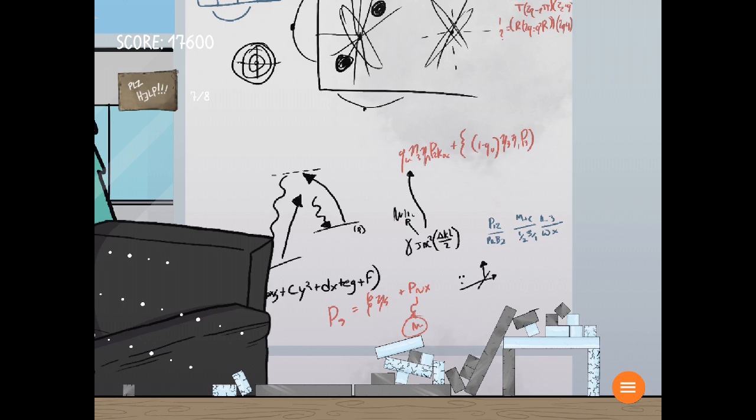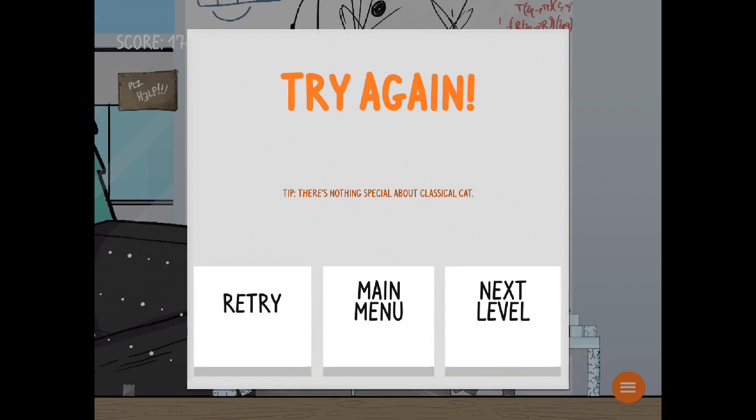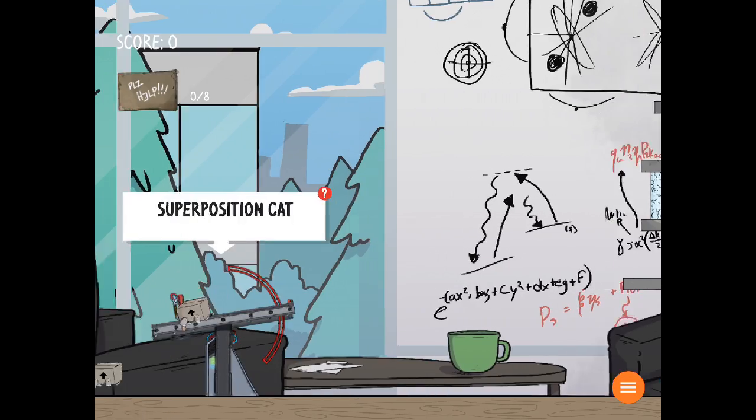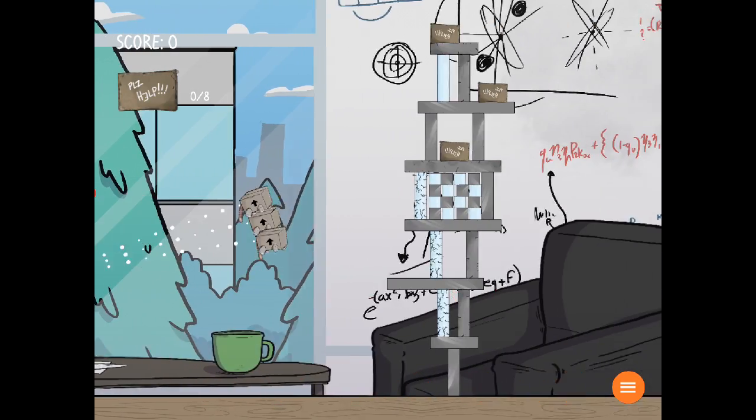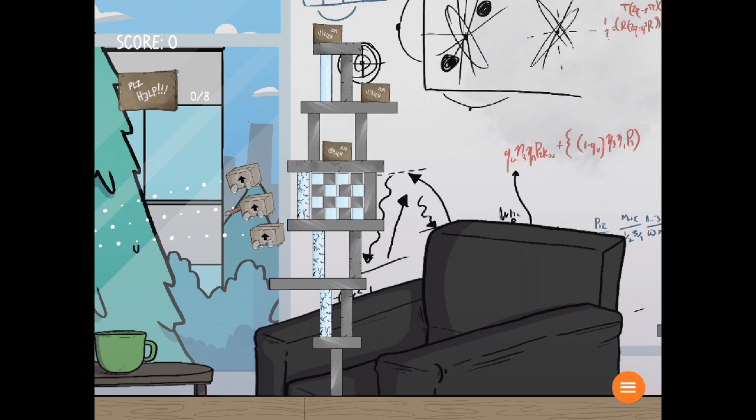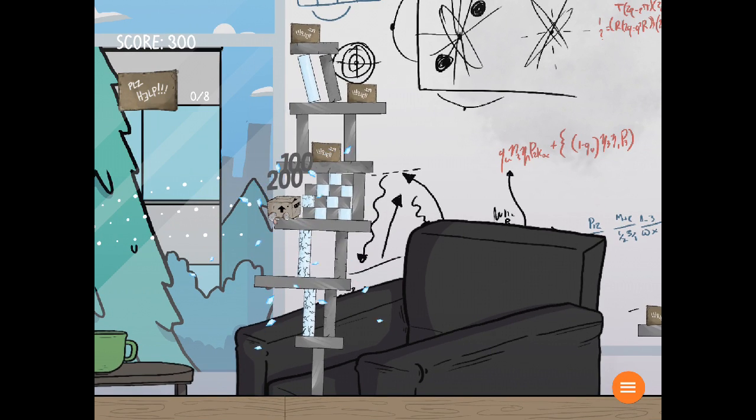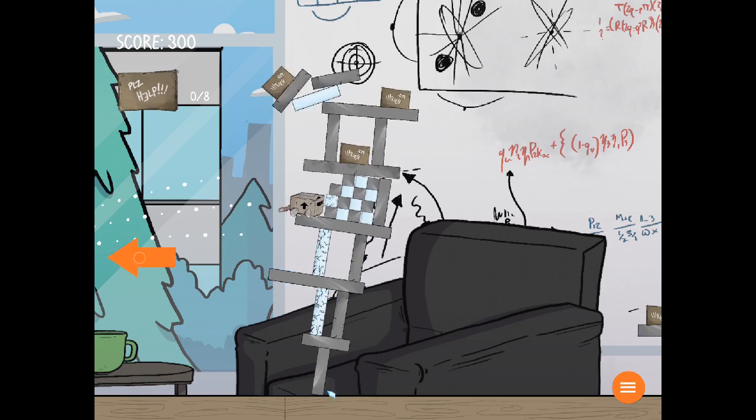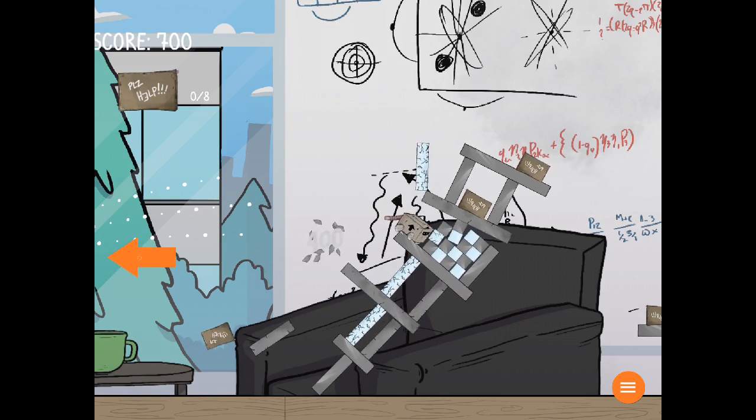So in this case, instead of having the cat either alive or dead in a box, this cat is in one of three different places. Now usually, these are like three different universes in which the cat, in one universe is at the top, and one universe is in the middle, and one universe is at the bottom.